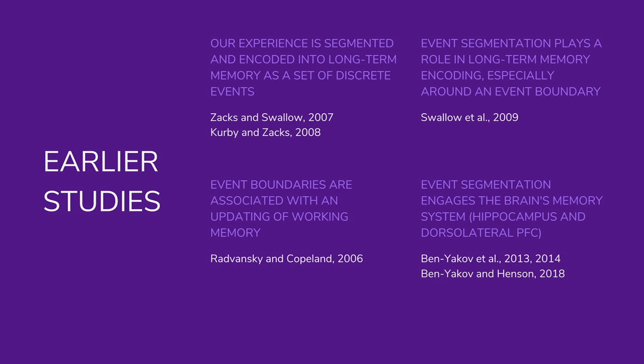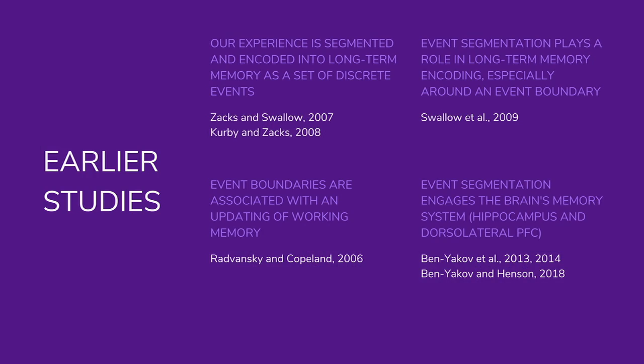Even if an episode lasts minutes or hours, we don't remember everything equally — we tend to remember things at the beginning and end, at the boundaries, better than in the middle. Additionally, event boundaries are associated with an updating of working memory. At the moment we see a switch in a narrative, working memory essentially resets — it reboots, cleanses itself, and refocuses on the next chapter.